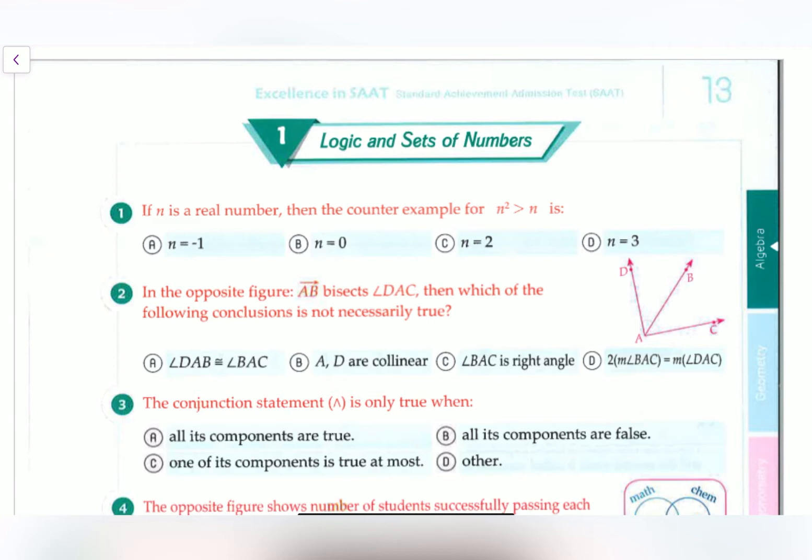So the first question says, if n is a real number, then the counterexample for n squared is greater than n is? First, let's identify what does counterexample mean? Counterexample means it has to disprove it. Meaning, we have to deny the claim. We have to disprove the claim. So we have to look for the one that doesn't make it right. Let's test it out.